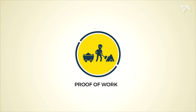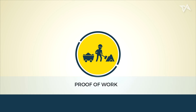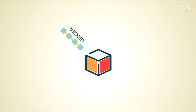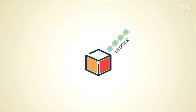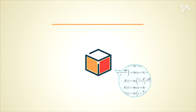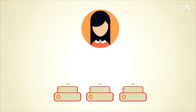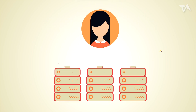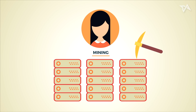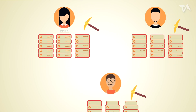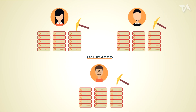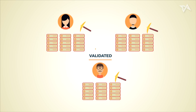First, let's take a look at proof-of-work. In a proof-of-work system, transaction data is stored in blocks, validated by having people solve a complicated math problem attached to it. This is typically done by powerful computers and is known as mining. A reward in the form of a cryptocurrency is issued to the first miner who cracks the problem.